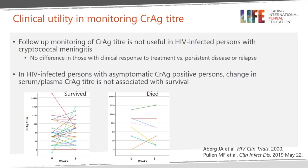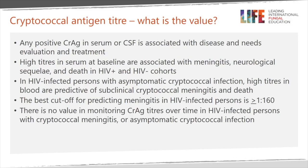Regarding the clinical utility of monitoring CrAg titer over time: follow-up monitoring of CrAg titer is not useful in HIV-infected persons with cryptococcal meningitis — no difference has been seen in those who've had clinical response to treatment versus persistent disease or cryptococcal relapse. Furthermore, in HIV-infected people with asymptomatic cryptococcal antigenemia, change in serum or plasma CrAg titer is not associated with survival. There was no statistically significant difference in change in titers between those who survived to six months versus those who died.